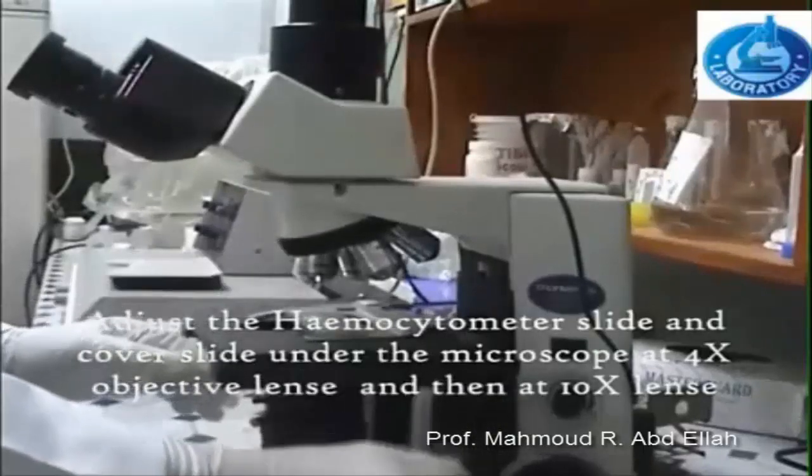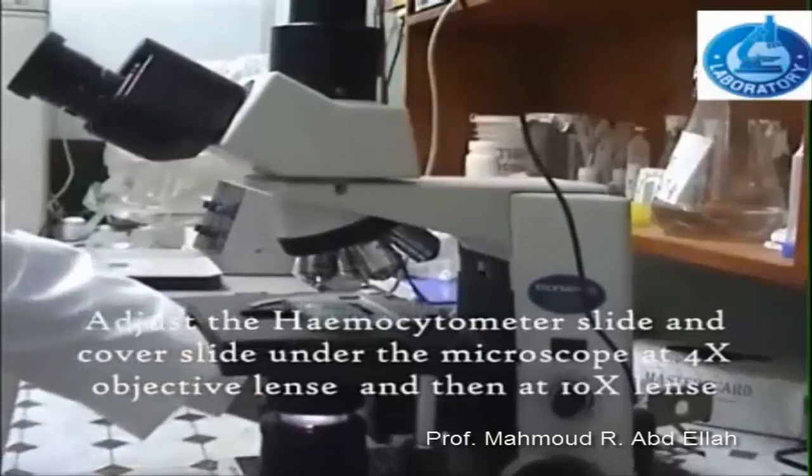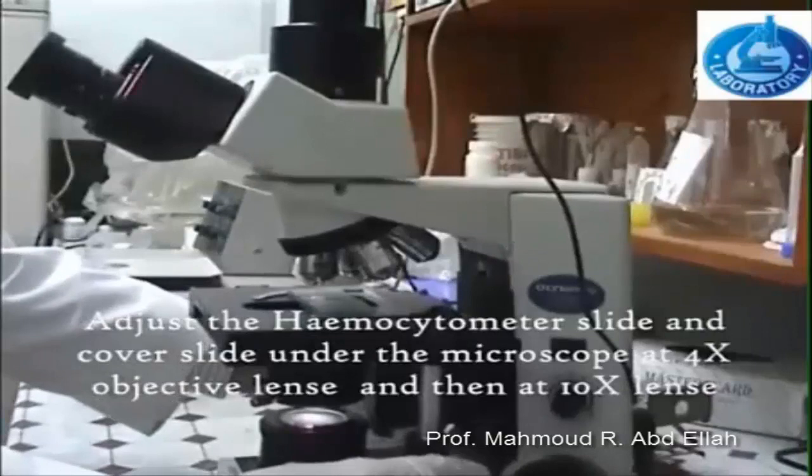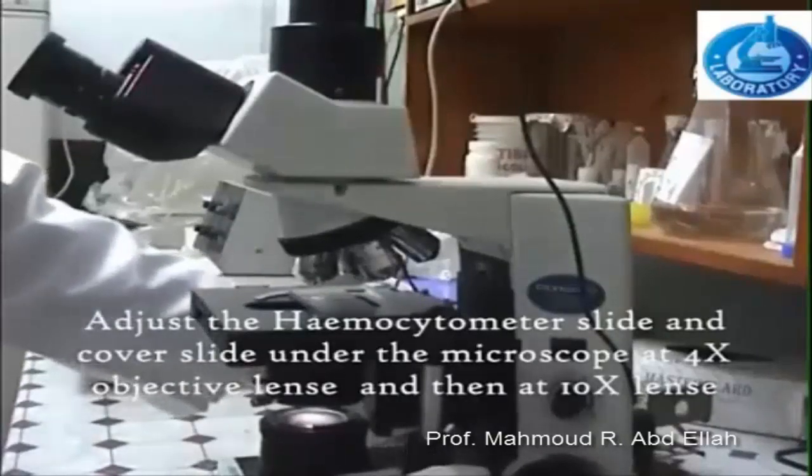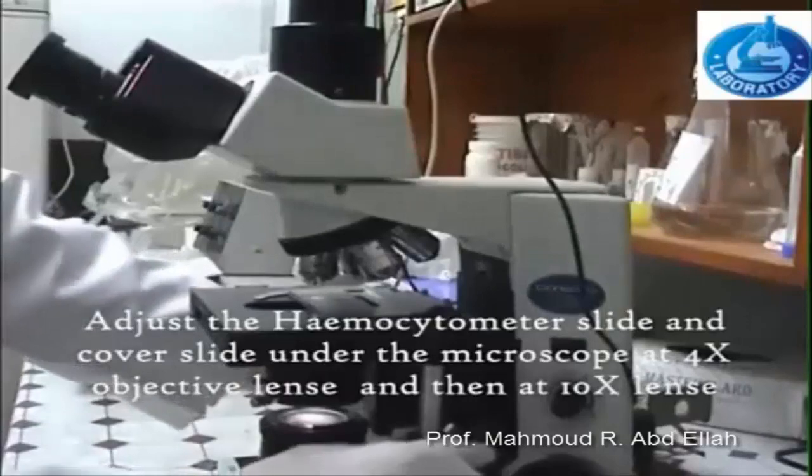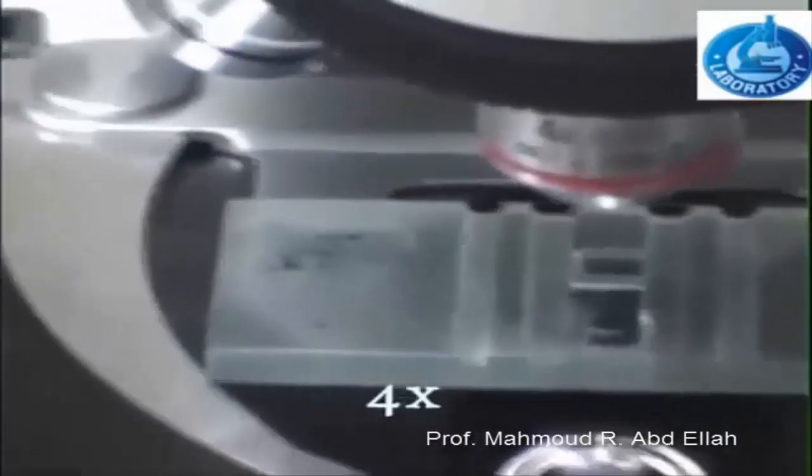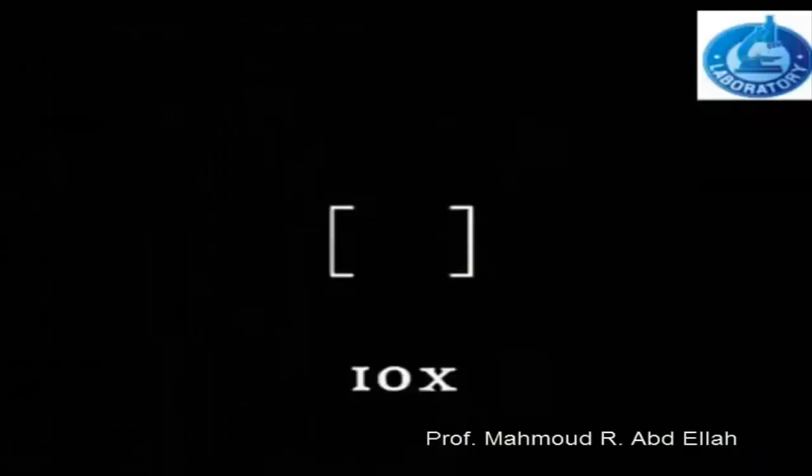First, put the hemocytometer slide on the stage. Elevate the stage and center the area containing the counting chamber through the objective lens. Under the microscope at 4x, you will see the entire counting area, which consists of a large square divided into 9 equal squares.